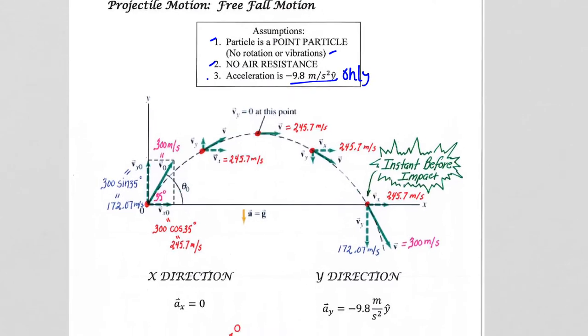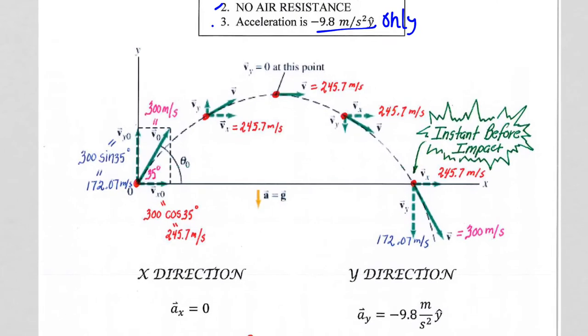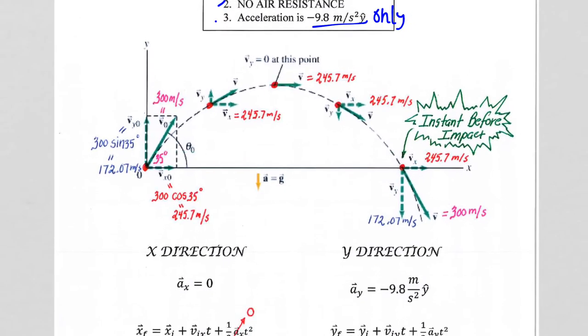In terms of how you need to think about projectile motion, you want to think of projectile motion as two one-dimensional motions occurring at the same time. So what do I mean by that? You want to think of the vertical part of projectile motion.